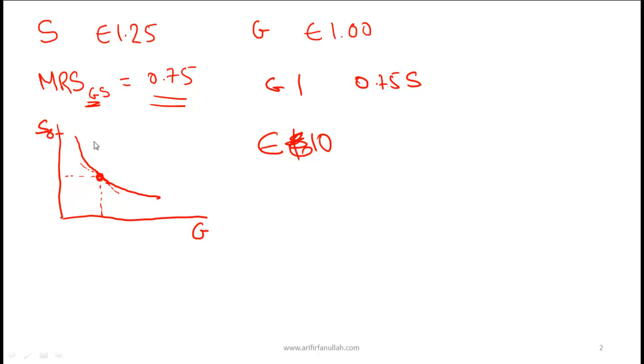The answer is he will buy 8. Why? Because 10 divided by 1.25 is 8. And if he buys gelato then he will buy 10. So if he buys sorbet he buys 8 of those. If he only buys gelato there will be 10.